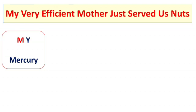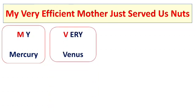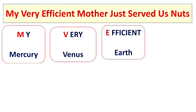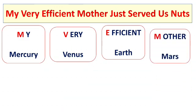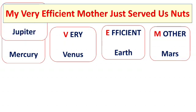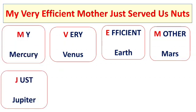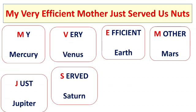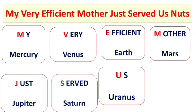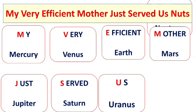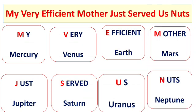M for Mercury, V for Venus, E for Earth, M for Mars, J for Jupiter, S for Saturn, U for Uranus, and N for Neptune. I hope it will help you to remember the names of the planets.